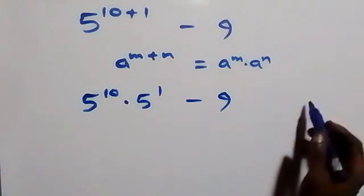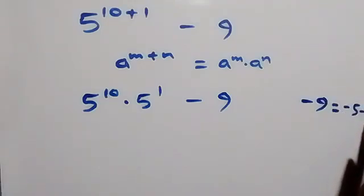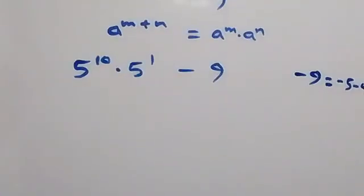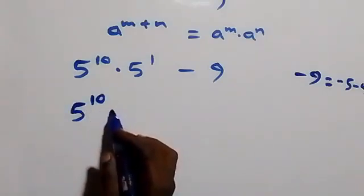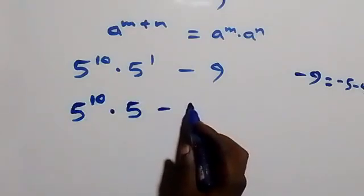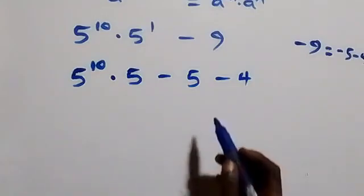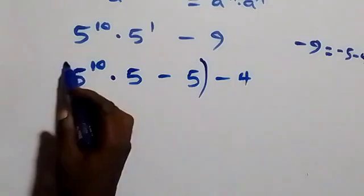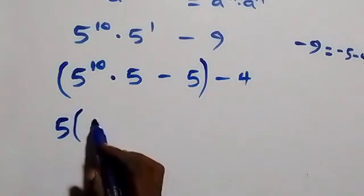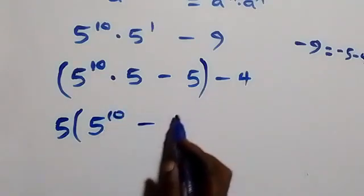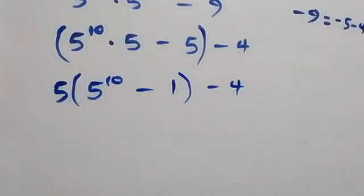Also, minus 9 can be written as minus 5 minus 4. So here we have 5 raised to power 10 times 5 raised to power 1, which is 5, then minus 5, minus 4. When we group this together, we have 5 common and we factor it out, giving us 5 into bracket: 5 raised to power 10 minus 1, then minus 4.